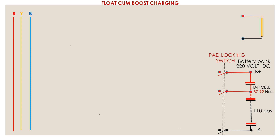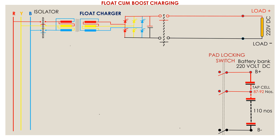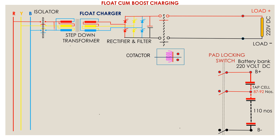This is the load circuit of 220 volts. This is a float charger having an isolator at both ends of the charger. This is a contactor. When the float charger is made on, the contactor closes its contacts to allow a path for the charging current to the battery bank.